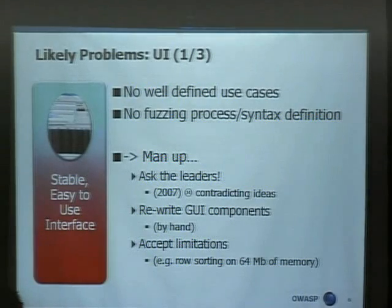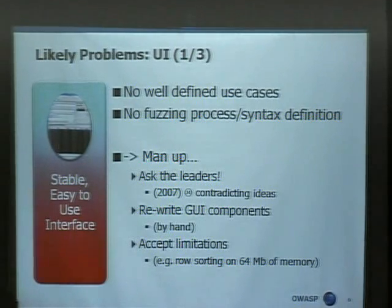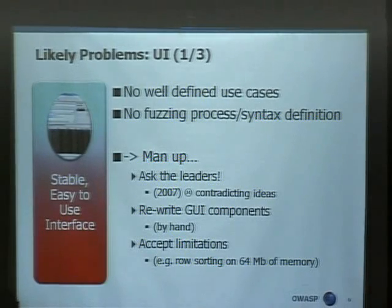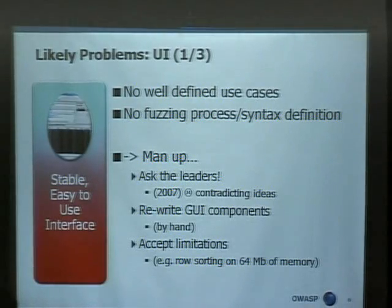How do we solve the problem of the user interface? We asked the OWASP leaders. Unfortunately we got very contradicting results. For example, if you ask Dennis Cruz what he wants from a fuzzer, it pretty much resembles the Burp Suite. But if you ask Dan Kultzberg, he'd just say he wants to copy-paste the GET URL and go through a number of fuzzes. There was some email correspondence, and we went through all those responses, but unfortunately they were contradicting — you can't do one and the other together. Different people in this discipline have different ideas of what fuzzing actually is.